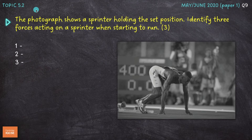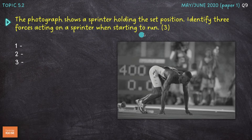Question number one is on topic 5.2. Links to short summary videos containing everything you need on Chapter 5 are down in the description, so go and watch those. If you struggle with a question, go and watch the relevant video, then come back and attempt it. The photograph shows a sprinter holding the set position. Identify three forces acting on a sprinter when starting to run, for three marks. This is a really easy three marks because the command word is identify — no explanation or description required, just name three forces acting on that sprinter.